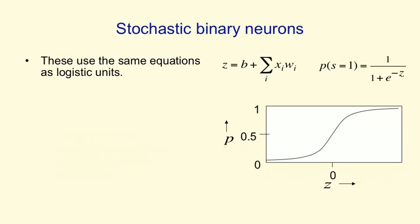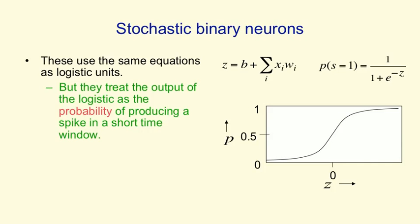Finally, the stochastic binary neurons. They use just the same equations as logistic units. They compute their total input the same way, and they use the logistic function to compute a real value, which is the probability that they would output a spike. But then instead of outputting that probability as a real number, they actually make a probabilistic decision, and so what they actually output is either a 1 or a 0. They're intrinsically random. So they're treating the p as the probability of producing a 1, not as a real number. Of course, if the input is very big and positive, they will almost always produce a 1, and if the input's big and negative, they'll almost always produce a 0.